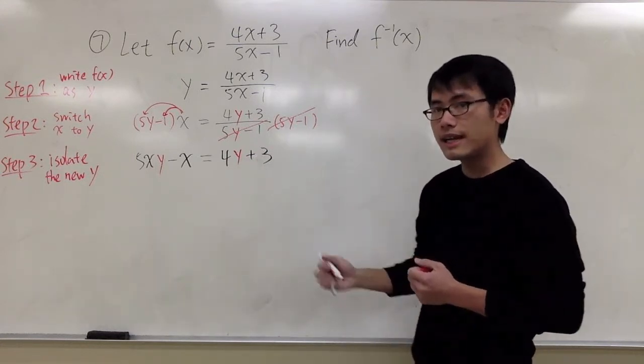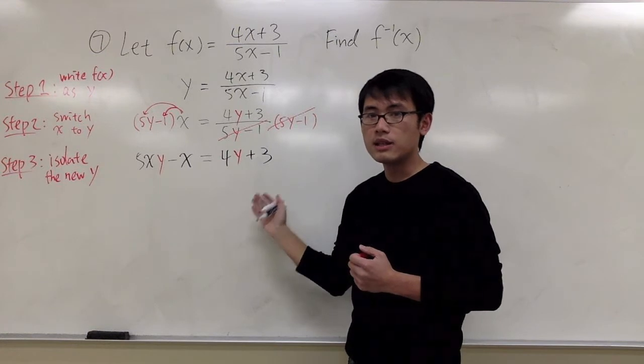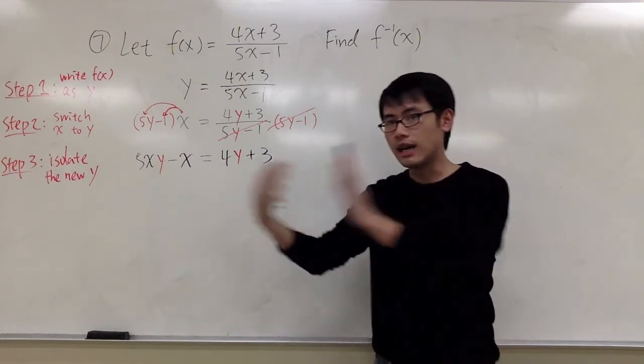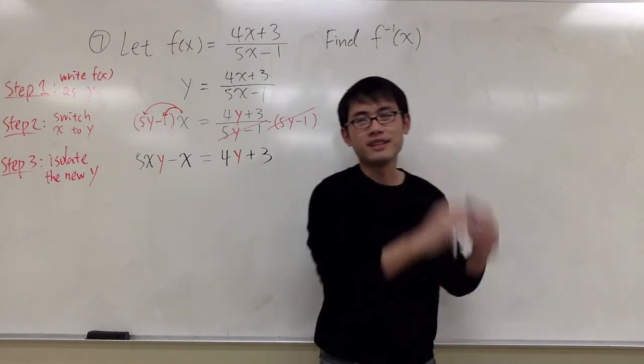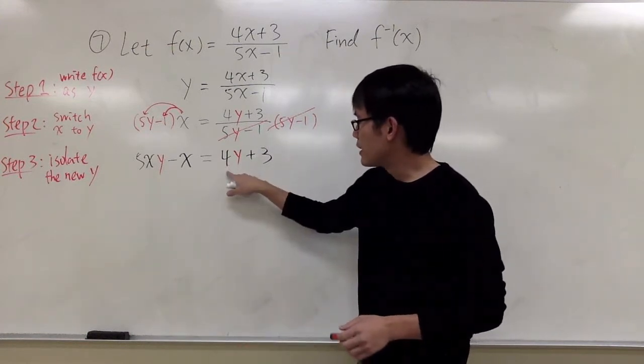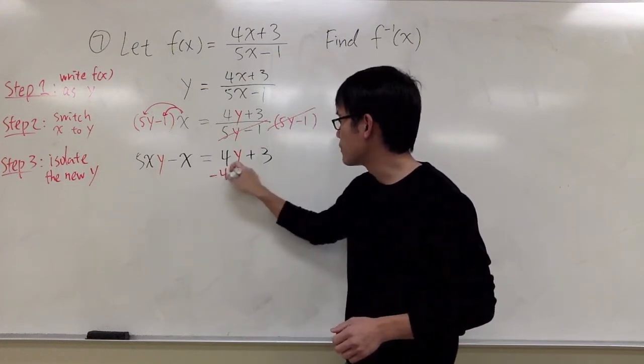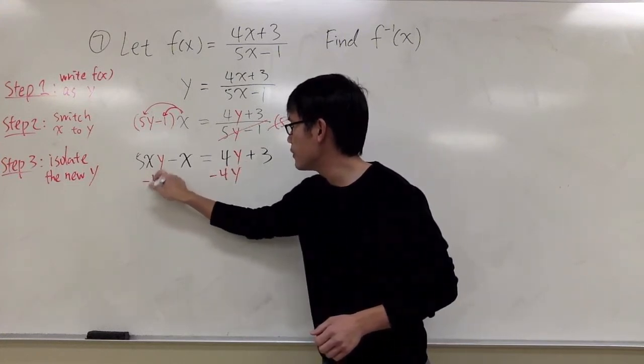And now you see that this equation has y on both sides. So to isolate y, we have to first make sure that all the y's are on one side, and then the rest are on the other side. Right here I have the 4y. Let me bring this to the other side by minus 4y here, and 4y here.